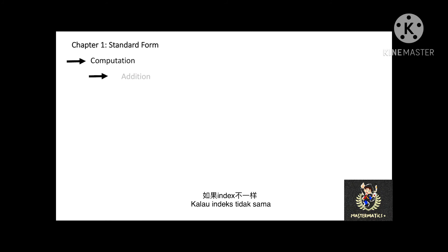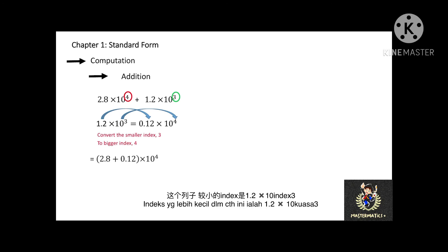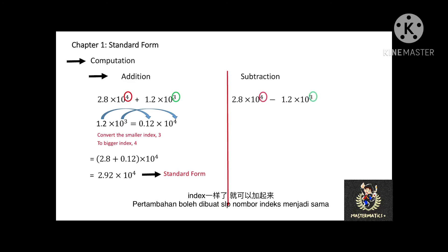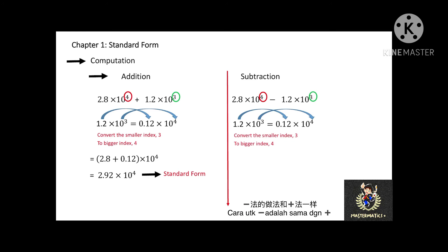How about when the index numbers are different? For example, 2.8 times 10 to the power of 4 plus 1.2 times 10 to the power of 3. First, pick the standard form with the smaller index and convert it to the bigger index. So 1.2 times 10 to the power of 3 becomes 0.12 times 10 to the power of 4. Now both standard forms have the same index, so you can add 2.8 and 0.12 times 10 to the power of 4. Make sure your final answer is in standard form. This method is also applicable for subtraction.